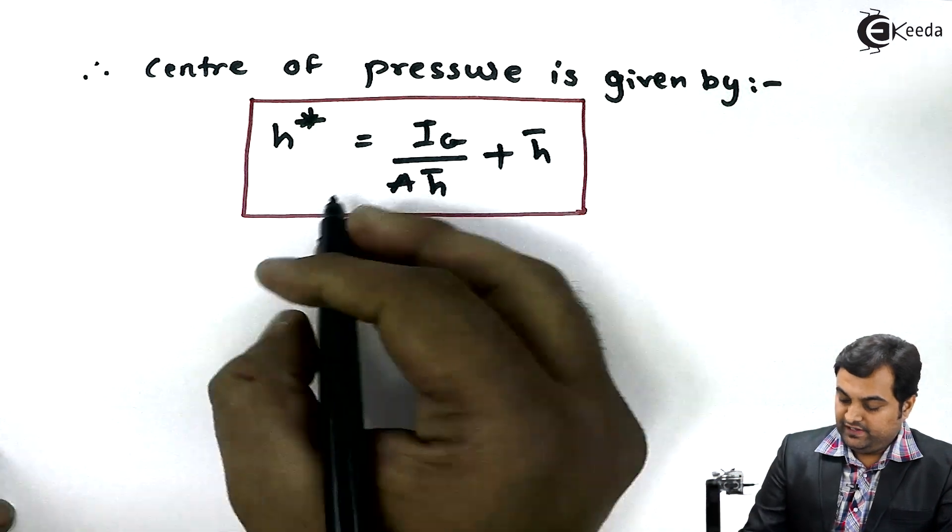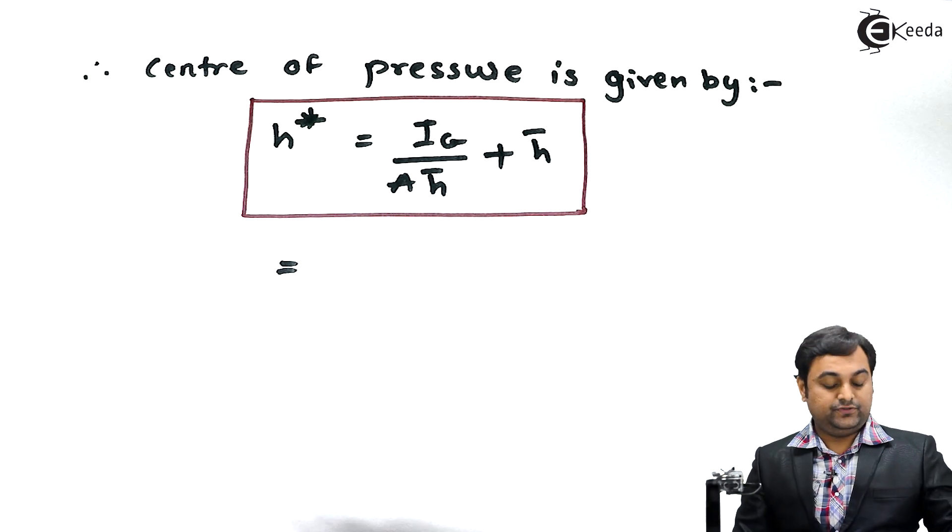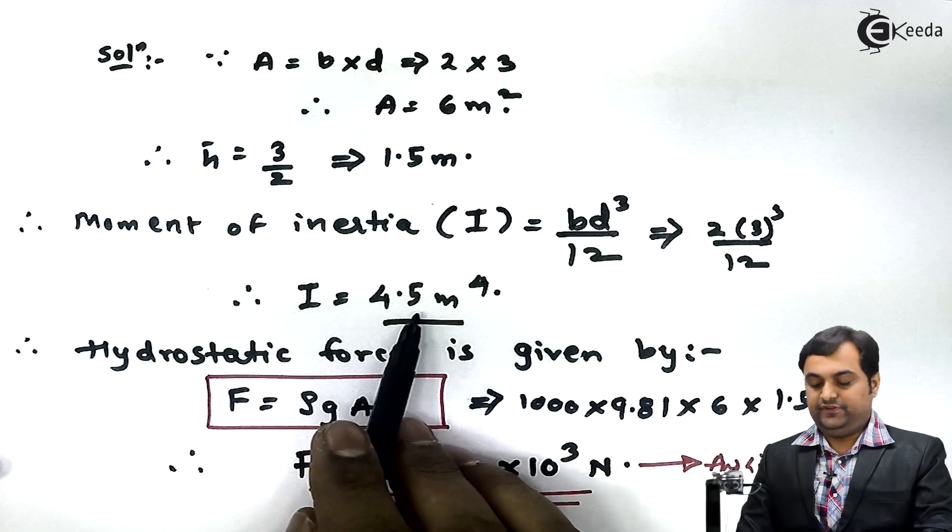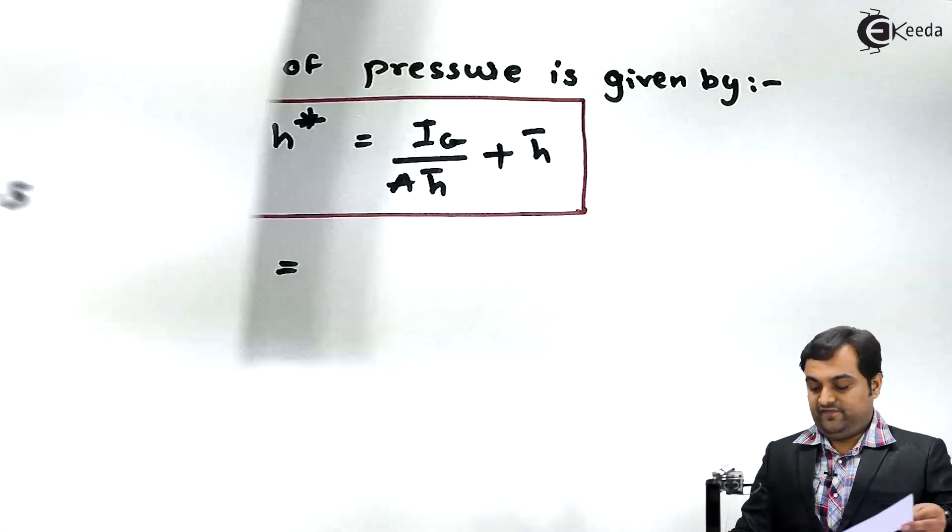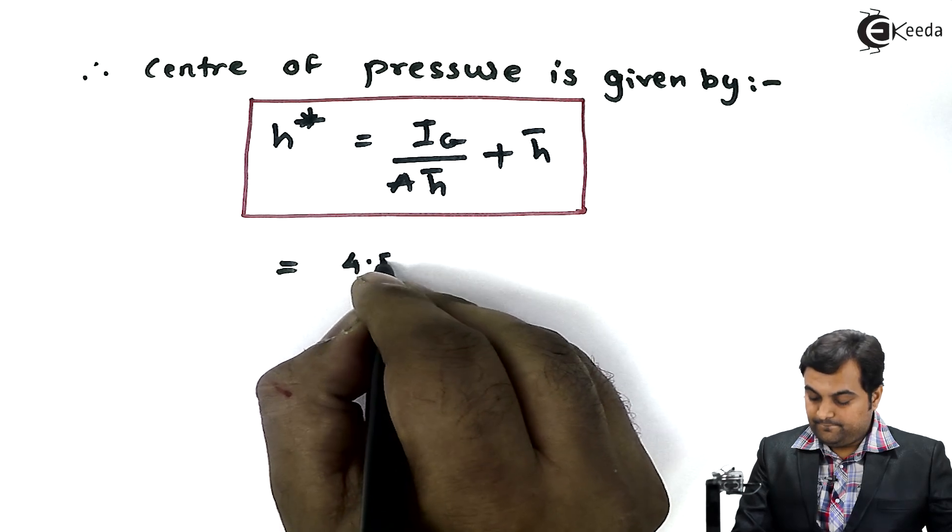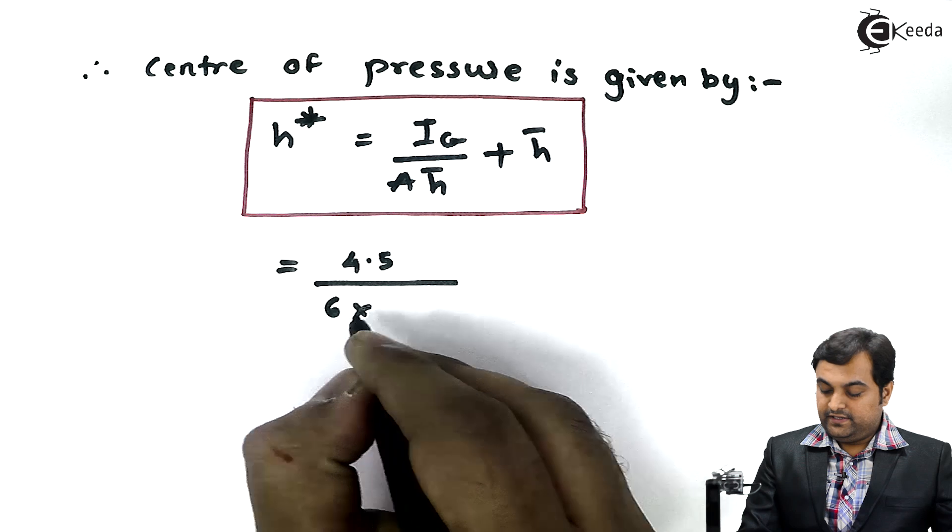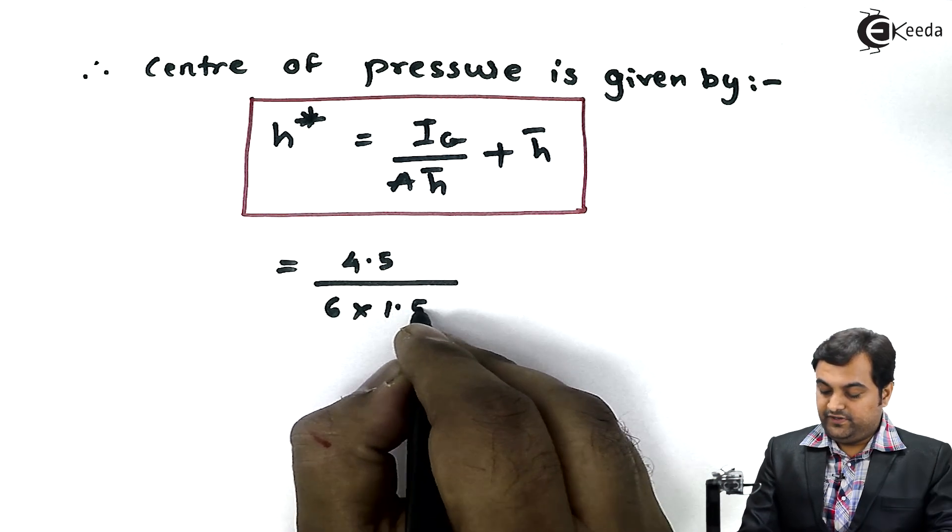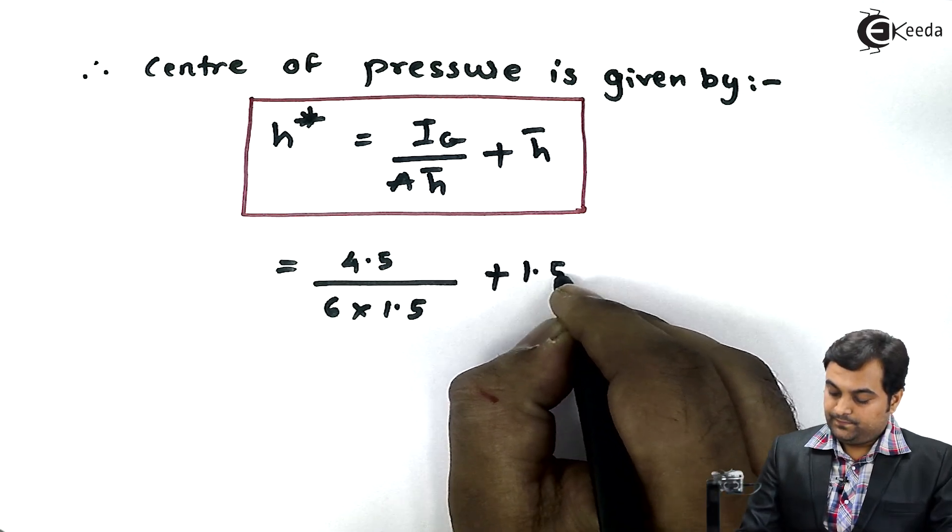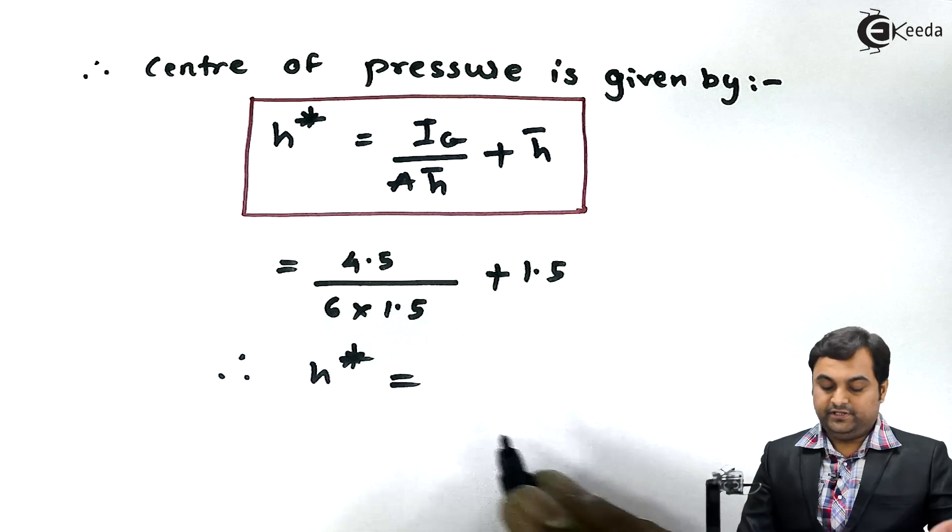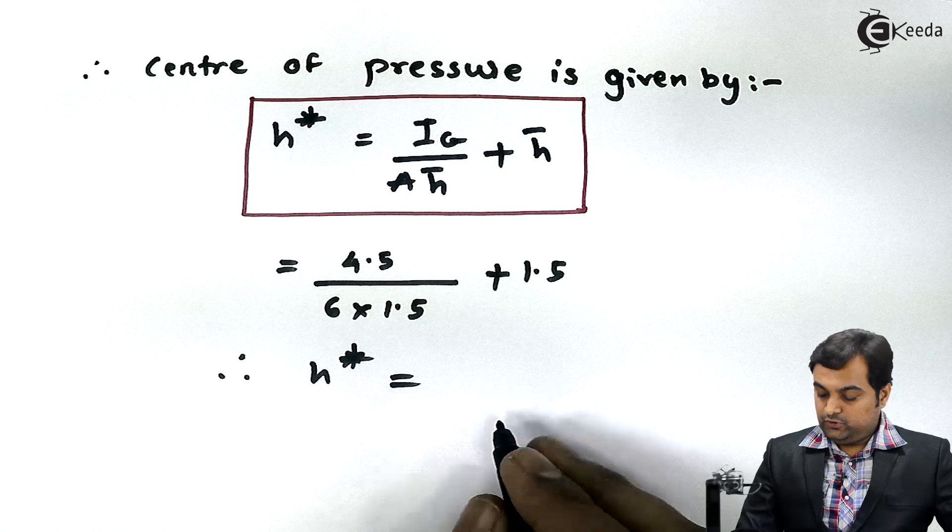Now I'll put the values here because I have all the values. This ig is nothing but moment of inertia about the centroid, it was 4.5, plus, divided by the area it was 6, h bar it was 1.5. So therefore h star value, if I calculate, it comes out to be 2 meter.